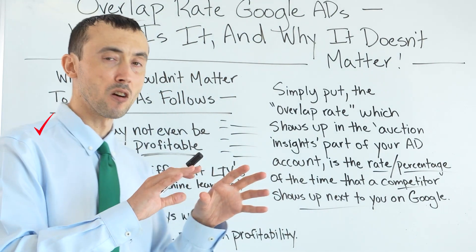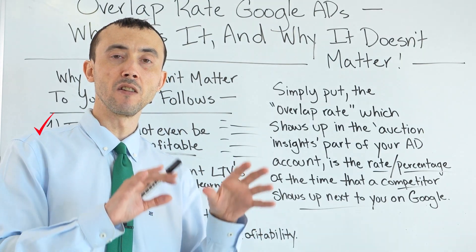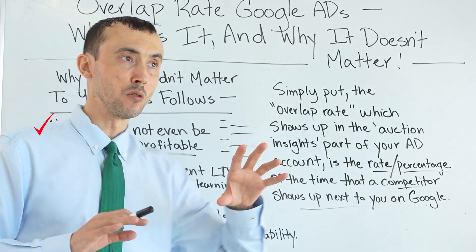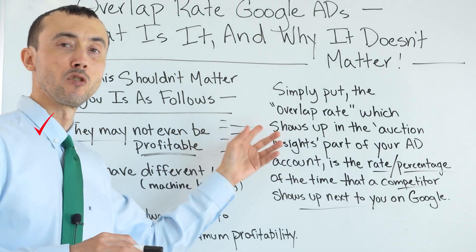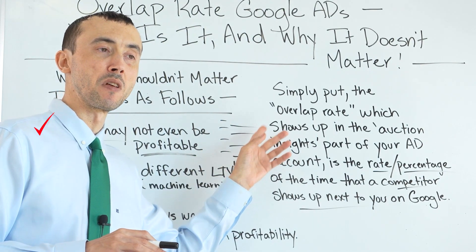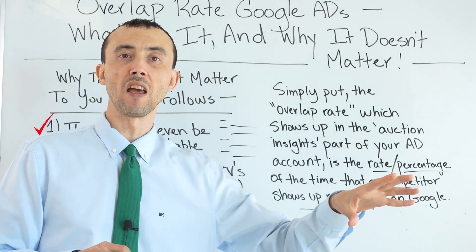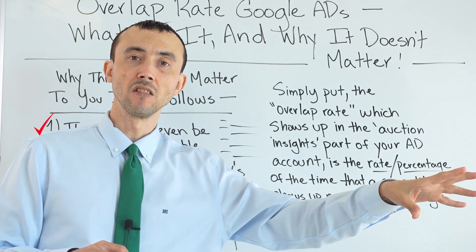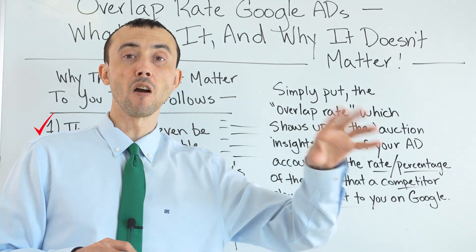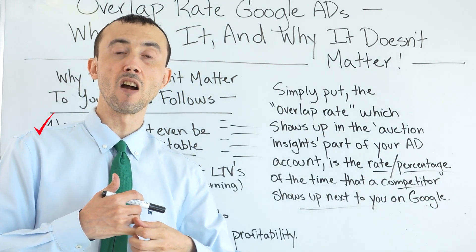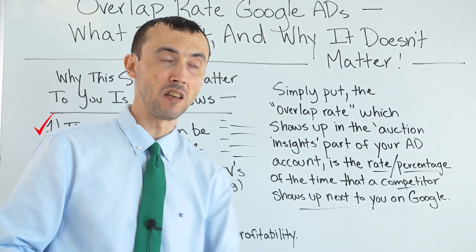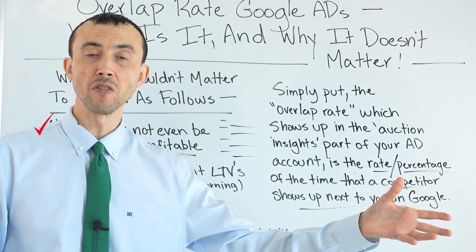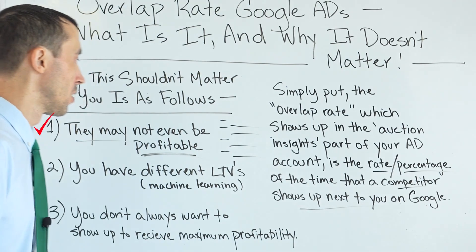Granted, there are some smart competitors where it is working and it would make sense to follow their lead, but that assumes they're in the 20% that actually are making money from Google Ads. Most people aren't making money from Google Ads — they just think they are, or they don't know that they're not. And you don't know which 20% they are.